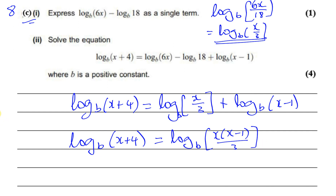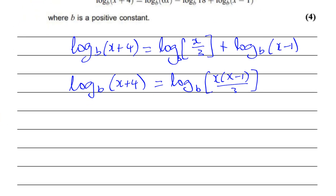Now, since we have log to the base b of something equals log to the base b of something else, those two somethings must be equal to each other. So therefore x + 4 is equal to x times (x - 1) over 3.